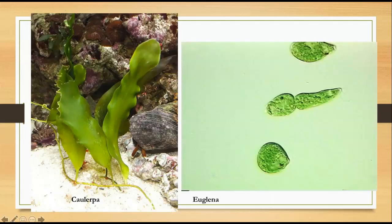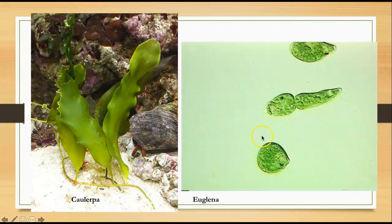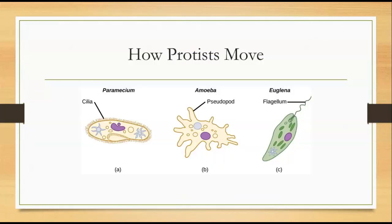Here is that Caulerpa seaweed — this entire thing is one cell. Pretty big cell! You might not have thought that's one cell, but it's a protist. And over here is a tiny microscopic euglena that is also one cell. So these are both protists. It's pretty weird to find that much variety in one class.